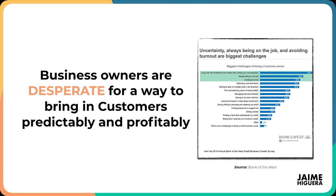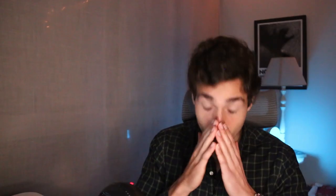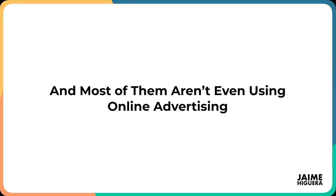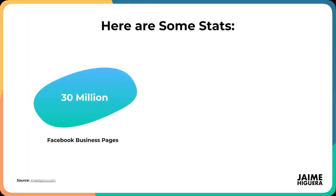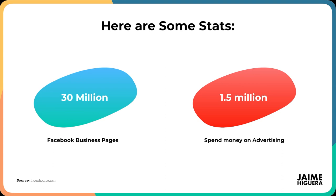Business owners are desperate for a way to bring customers predictably and profitably. This graph shows the biggest challenges of being a business owner, and number one is living with uncertainty — mainly, where is the next customer going to come from? If you have a predictable stream of customers on autopilot monthly, you eliminate that uncertainty. The funny thing is most business owners aren't even using online advertising. There are 30 million Facebook business pages in the world, but only 1.5 million are actually spending money on advertising — and that could literally be just $30 a month.